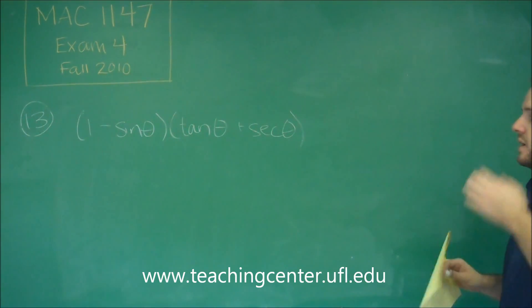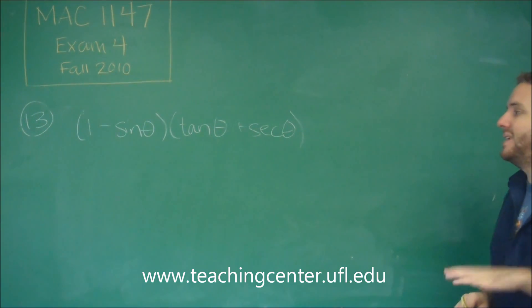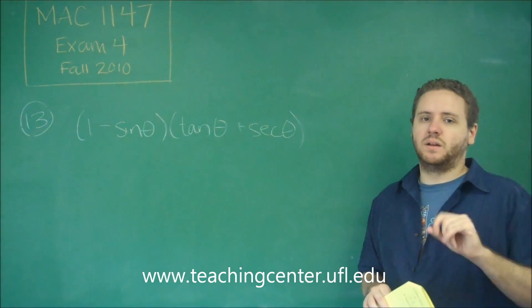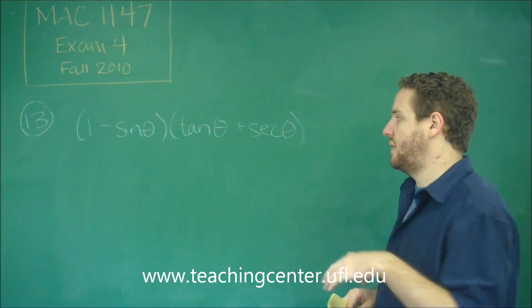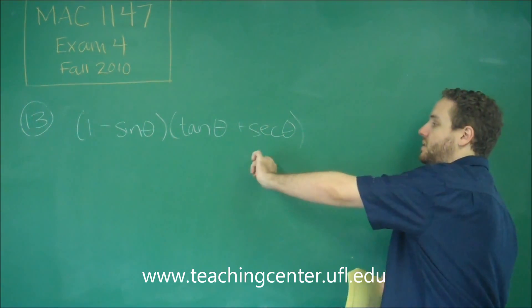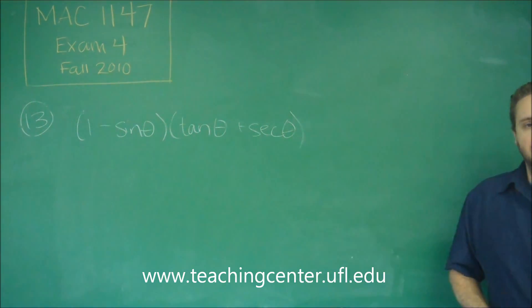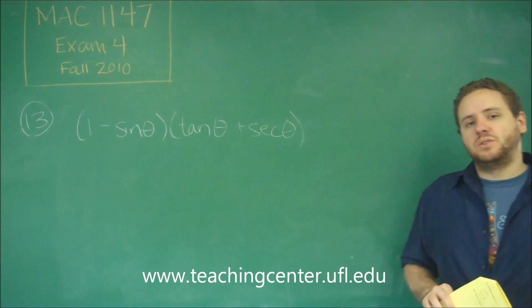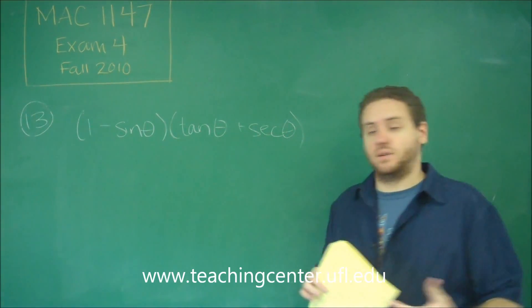One good thing to look for is that if you have anything other than sine and cosine, like tangents and secants, if they don't already conform to one of your identities, which this doesn't—tangent plus secant is not any identity that you know—one good thing to do is convert them all to sines and cosines.